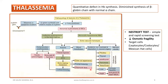The NESTROFT test is the Naked Eye Single Tube Red Cell Osmotic Fragility Test — a simple and rapid screening test for detection of beta thalassemia. In beta thalassemia, there is decreased osmotic fragility. In contrast, in hereditary spherocytosis, the osmotic fragility is much increased. Target cells — leptocytes, codocytes, Mexican hat cells — can also be seen in the peripheral smear in beta thalassemia.